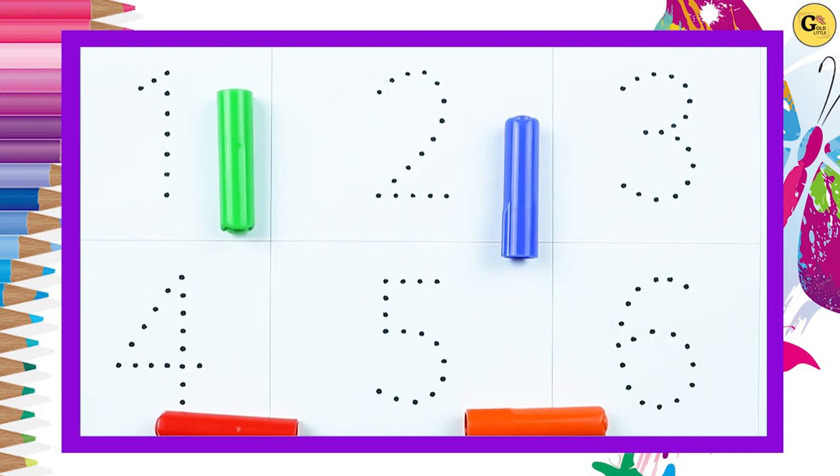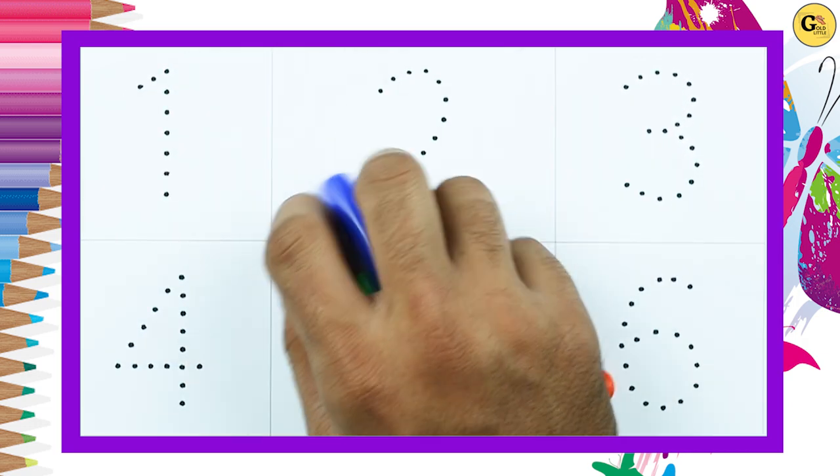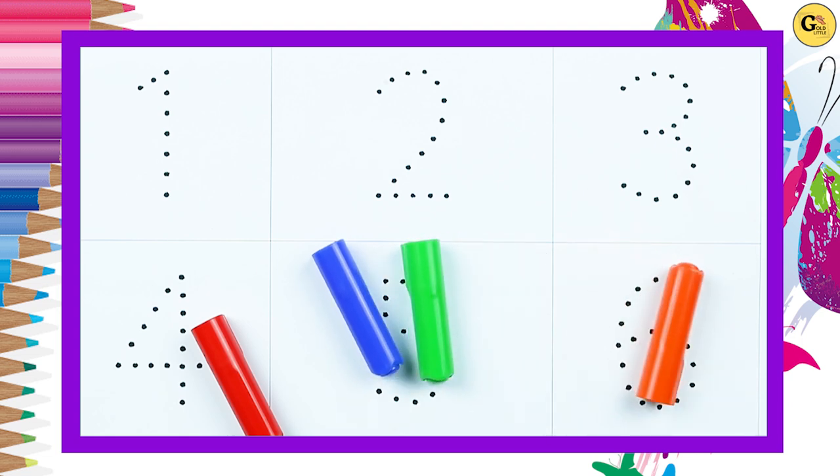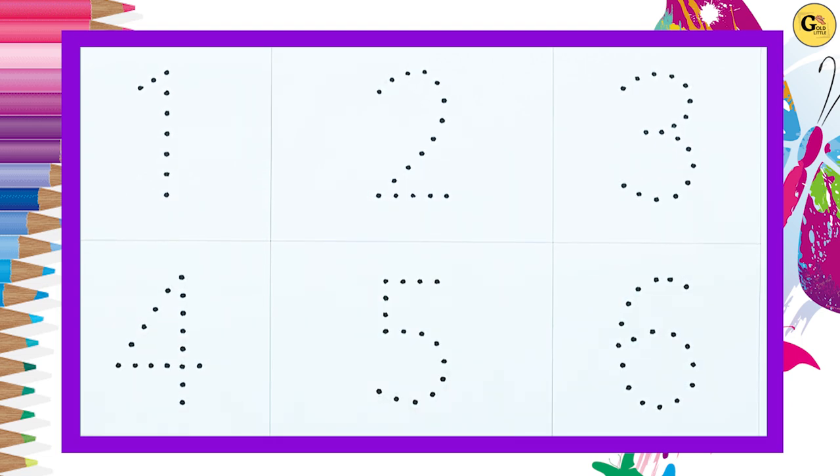Hello friends, today we learn numbers 1 to 10 with some colors. Red color, blue color, green color, orange color. Let's start.